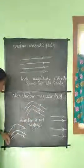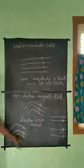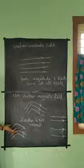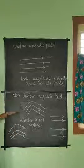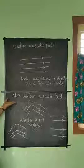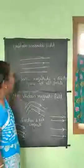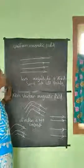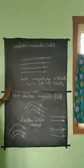In the case where both magnitude and direction are different, it is called a non-uniform magnetic field. The example here is a bar magnet. This is a 3-mark question: What are the differences between uniform magnetic field and non-uniform magnetic field?